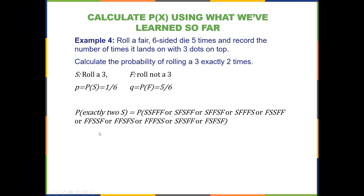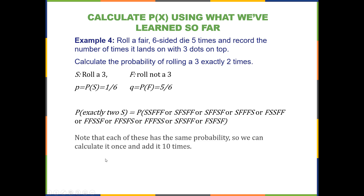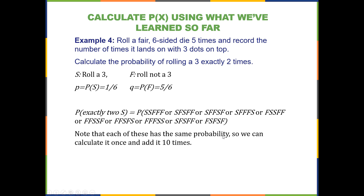We could have determined there were ten ways by using the combinations formula — five choose two. Each of these outcomes has the same probability because when applying the multiplication rule, success-success-fail-fail-fail gives us (1/6)² × (5/6)³. Since multiplication is commutative — meaning you can rearrange factors and still get the same product, just as 2×3 equals 3×2 — rearranging the order of successes and failures does not change the probability of each possible outcome.